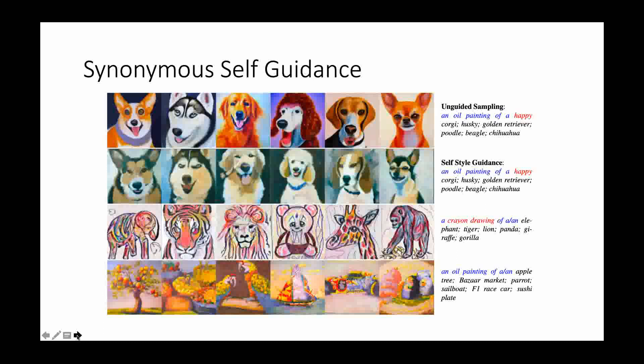Here are some visual examples of synonymous self-guidance that we are able to generate sets of images of the same style based on a set of different text inputs.